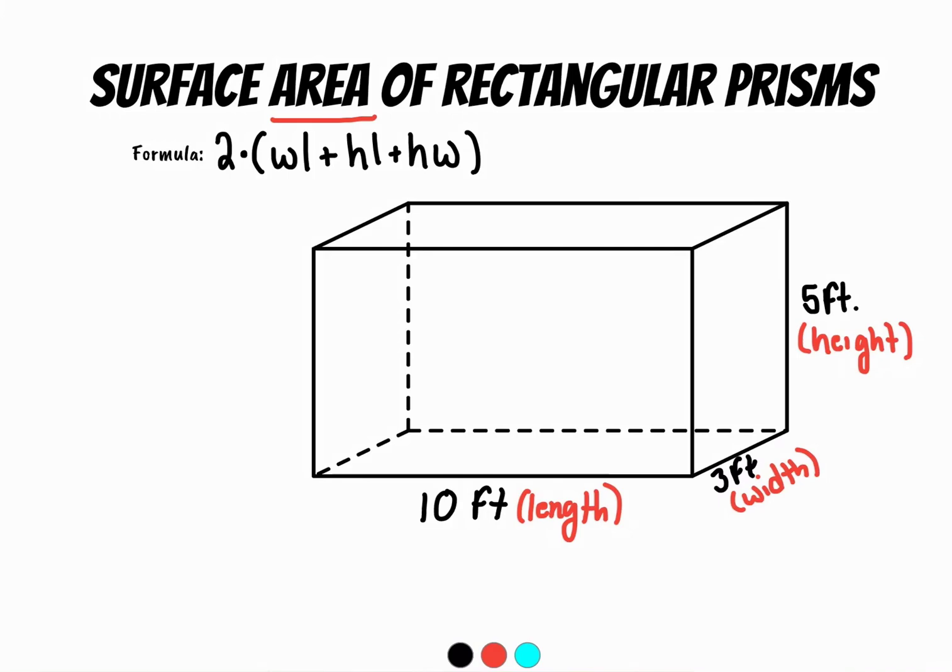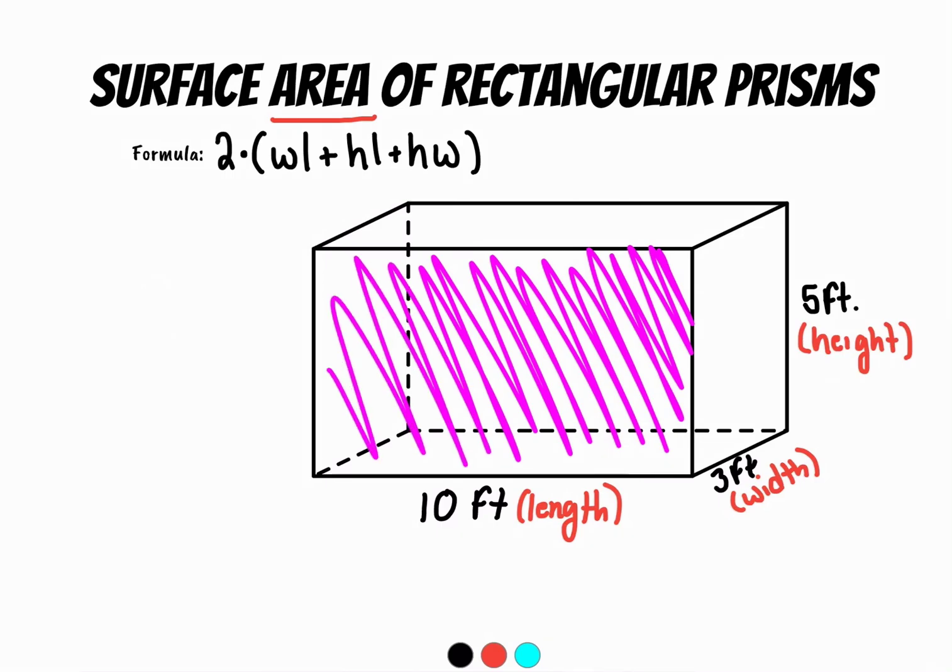Now volume is not the same. Volume is the amount inside. So imagine that this was like a fish tank. The amount of water you could put inside is the volume. We're not calculating the volume today. We're calculating all the space of the outside. So imagine if you were trying to paint this cube, to figure out the surface area would be how you'd figure out how much paint you'd need.